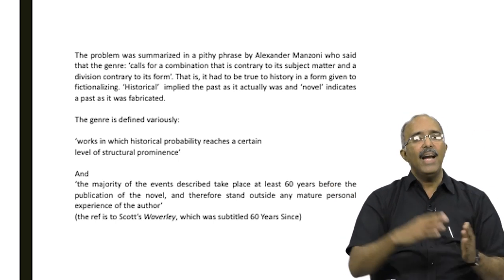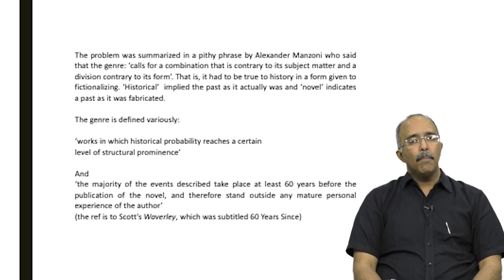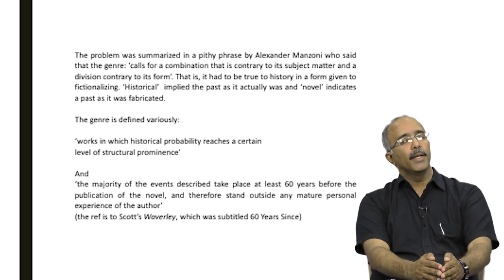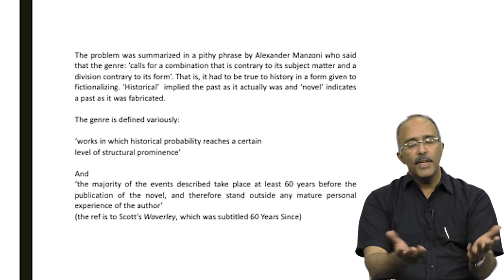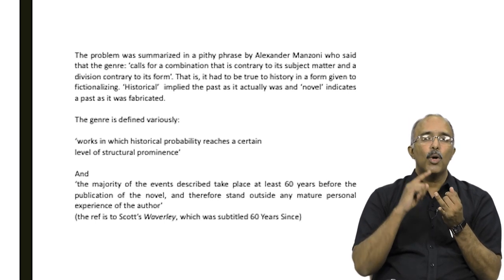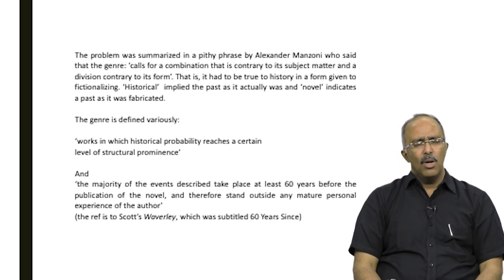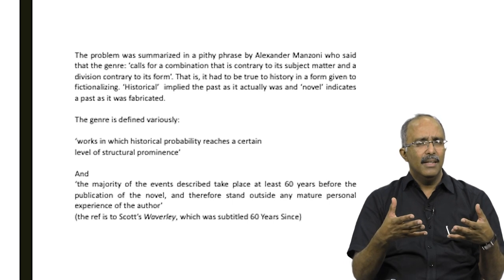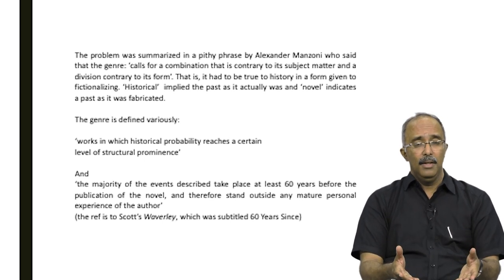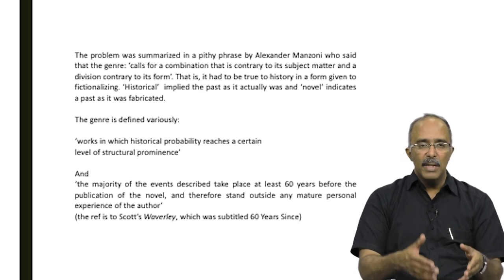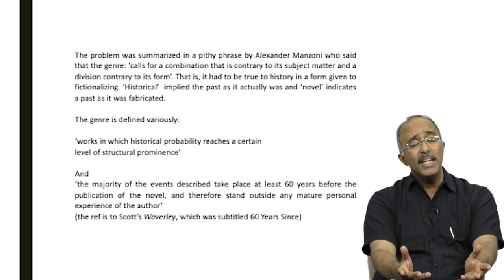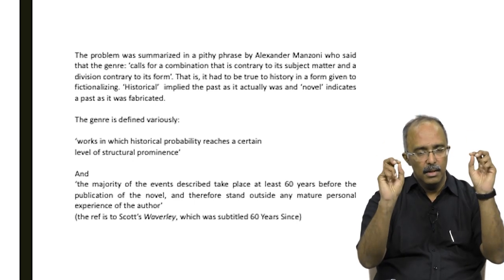How can you be true to history and put it in a fictionally acceptable form? Historical implies the past as it actually was; the novel indicates the past as it is fabricated. Can you make a romance out of historical reality and still make people believe in it? You needed to make people believe in the historical past and also be entertained by it. We do know that historical narratives when cast as textbook lessons are boring, but in a novel form they are more interesting. The problem is: if they are put in a novel form, would you believe in it? Because the tendency is to say that a novel form by definition is fiction and fabricated, so it is not really speaking a historically real account in the historical sense.